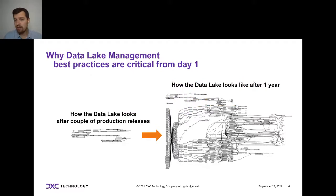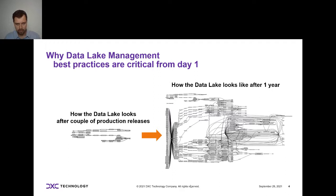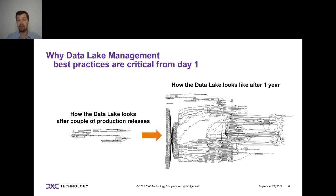You might think you don't have to do this, but let me give you a word of caution — you do. Every single new analytics platform starts like a simple lineage diagram on the left. The bubbles are data sets and the lines are ETLs. You start with maybe 25 data sets, 30 ETLs — you can completely manage it. Then one year later you look at what's on the right-hand side.